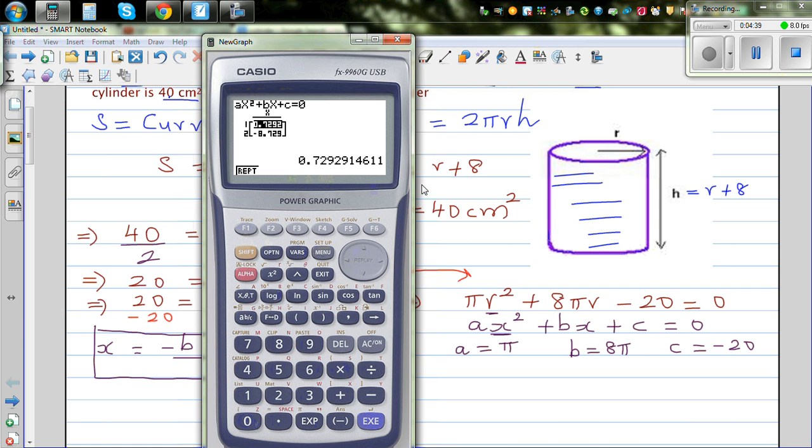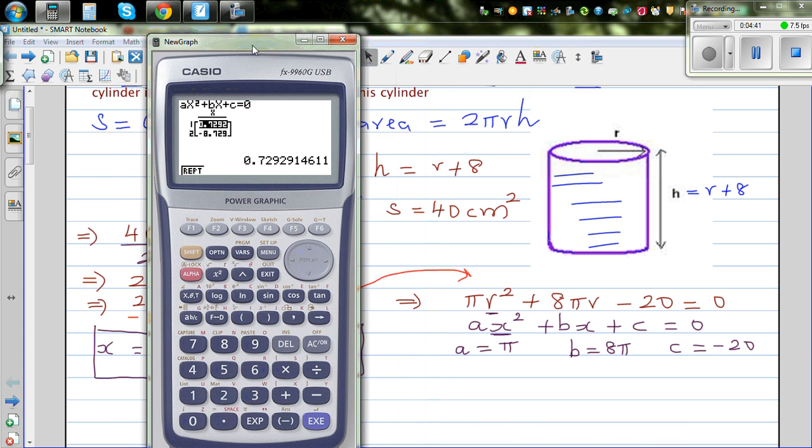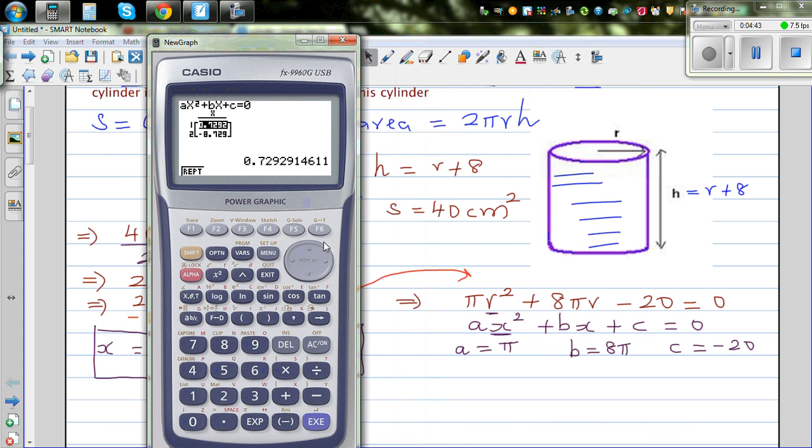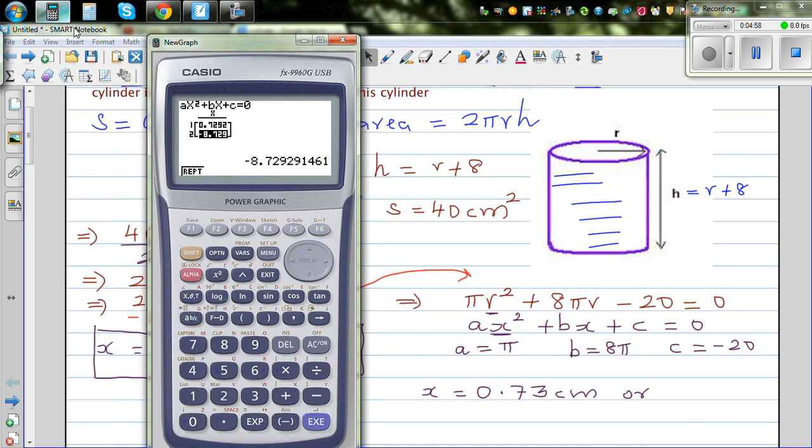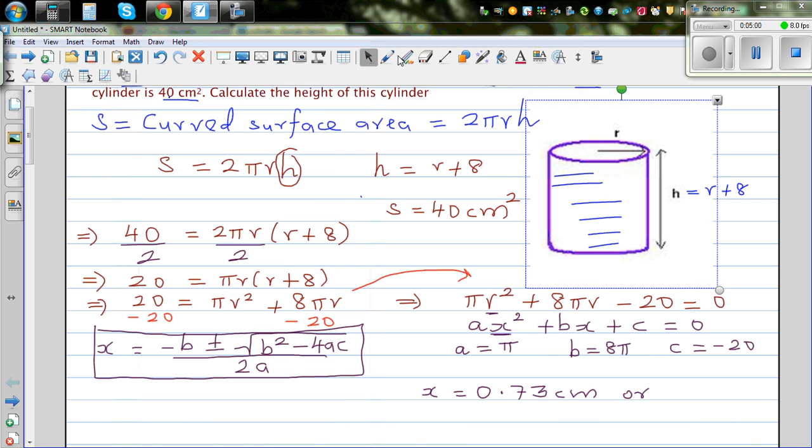You've got two answers, 0.73 or minus 8.73 in 2 decimal places. So we can say r equals 0.73 centimeters or minus 8.73 centimeters in 2 decimal places.